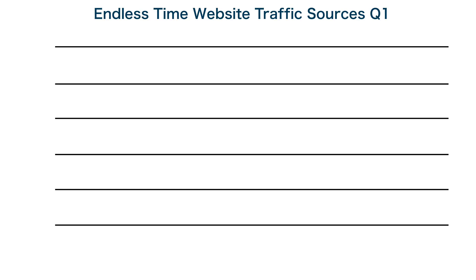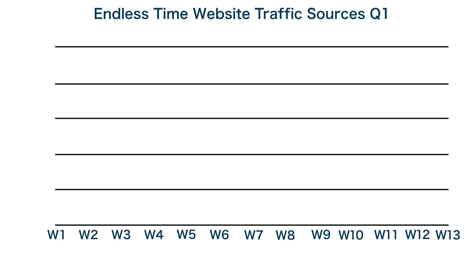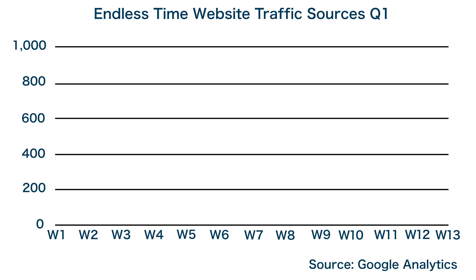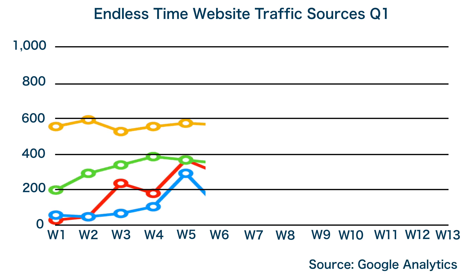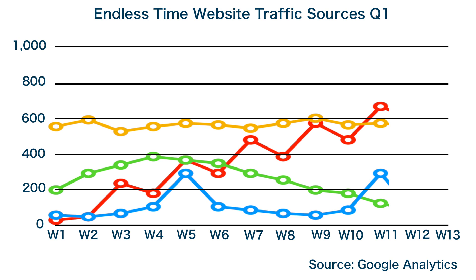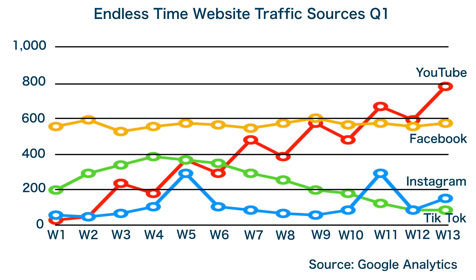At the top of the chart is the title which explicitly states the time frame of your analysis. The first quarter is expressed as weeks on the x-axis and on the y-axis you have the number of visits to the Endless Time website. The source of the data is Google Analytics and the different social media platforms are the four colored lines with accompanying labels.